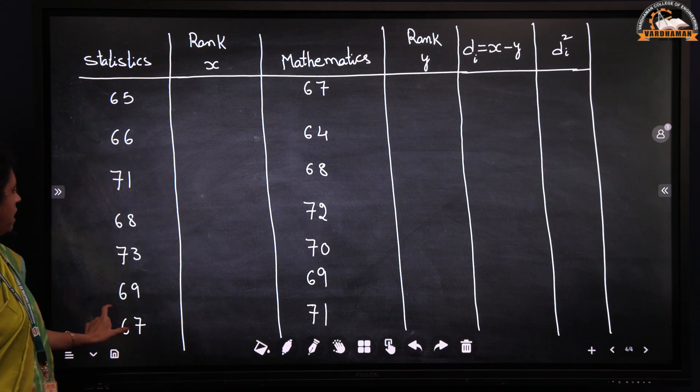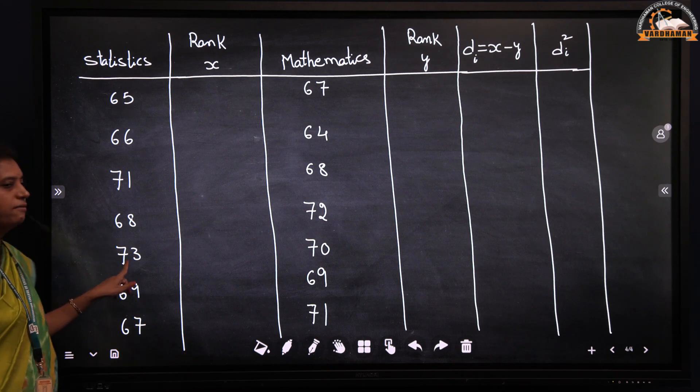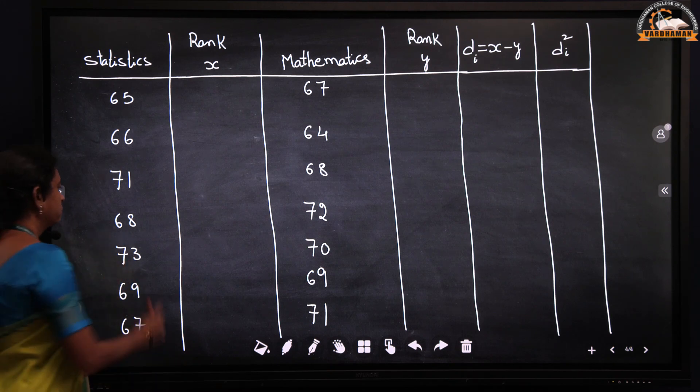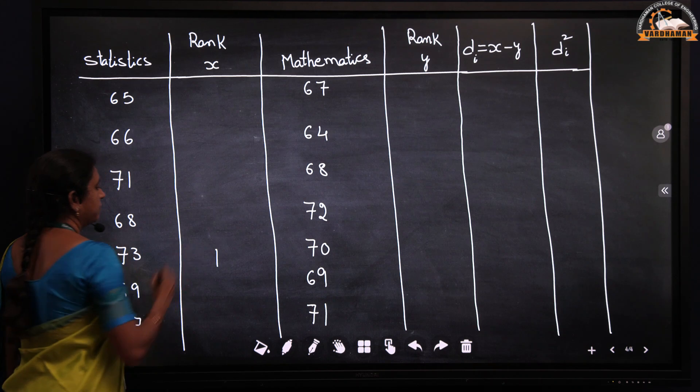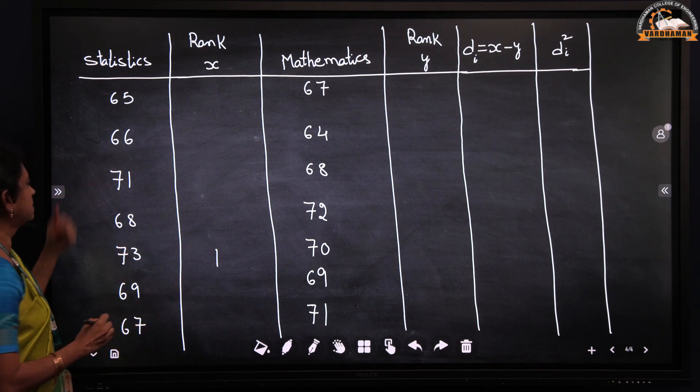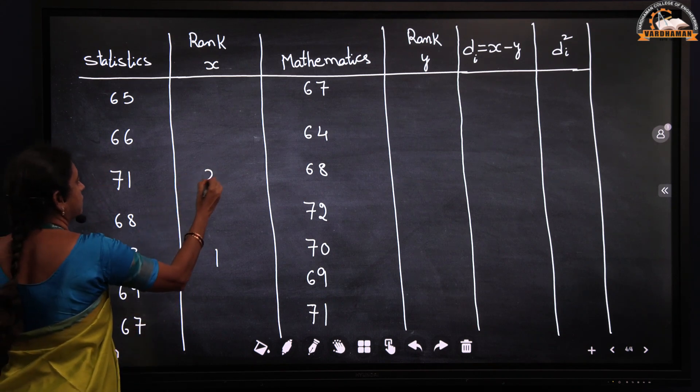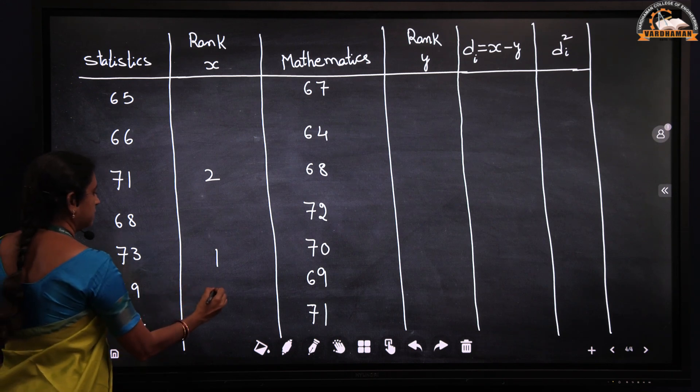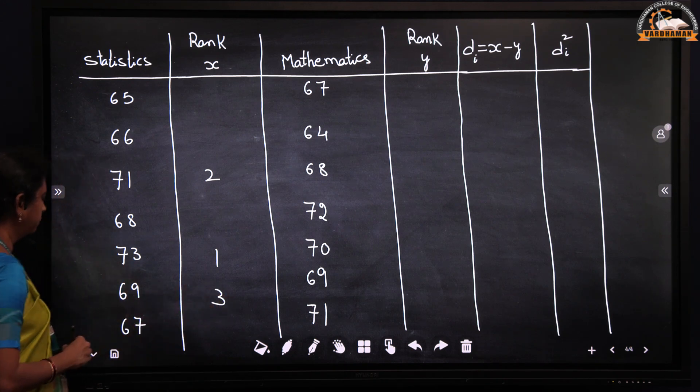In statistics we have to observe the marks. Here 73 is the highest mark, so I will allot rank 1 here. The next highest will be 71, which is allotted rank 2. Then 69 is the third highest so allot rank 3.